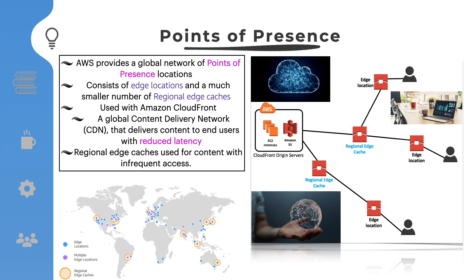Amazon CloudFront is a content delivery network used to distribute content to end users to reduce latency. Amazon Route 53 is a domain name system service. Requests going to either one of these services will be routed to the nearest edge location automatically in order to lower the latency.